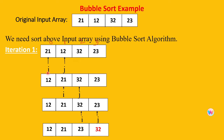Once we swap, increment i and j by 1. So i will reach position 1 and j will reach position 2. Again compare i and j: if j element is less than i element, swap; otherwise keep it as is. Here 32 is not less than 21, so keep it as is. Increment i and j again: i points at position 2 and j at position 3. Now compare: is 23 less than 32? Yes, so swap — 23 will come to 32's place and 32 will come to 23's place.